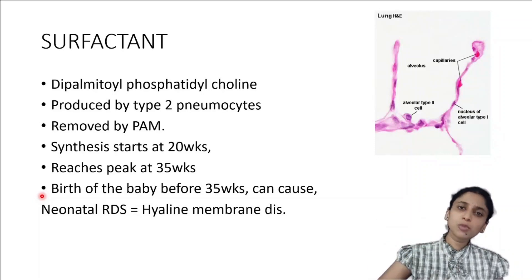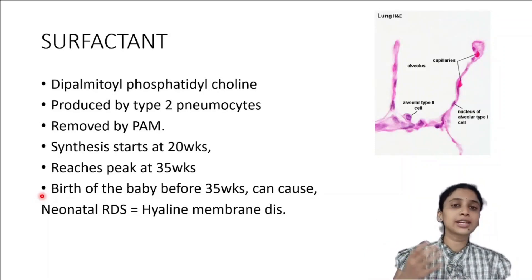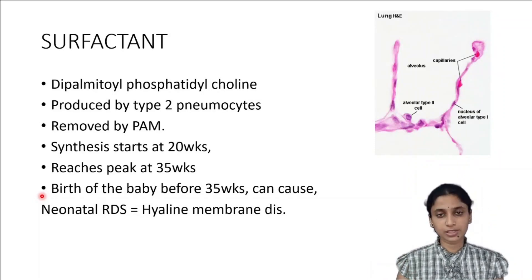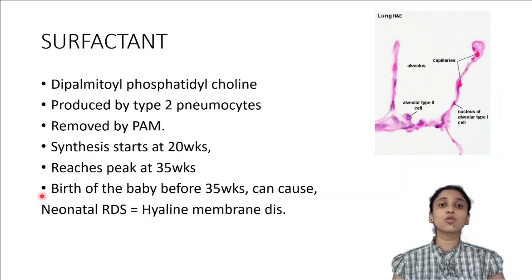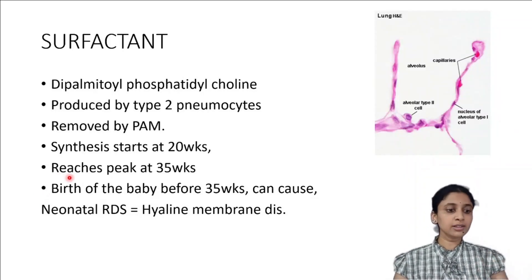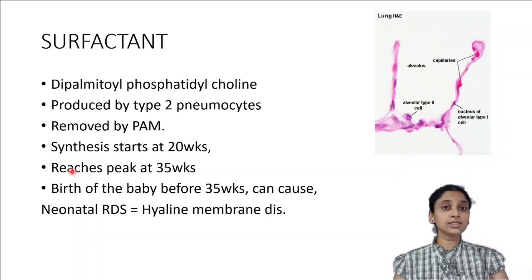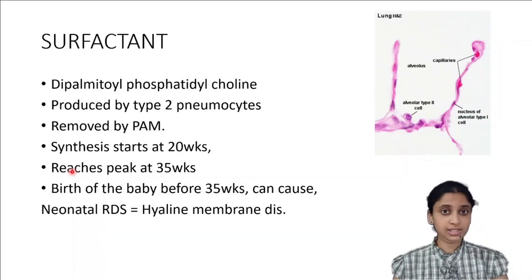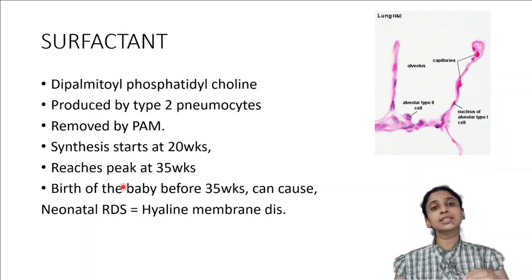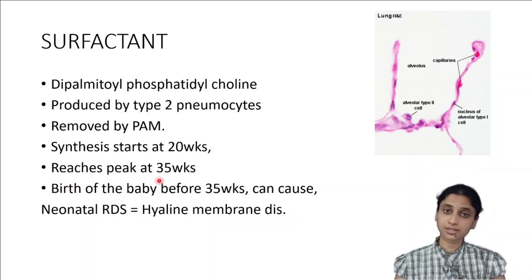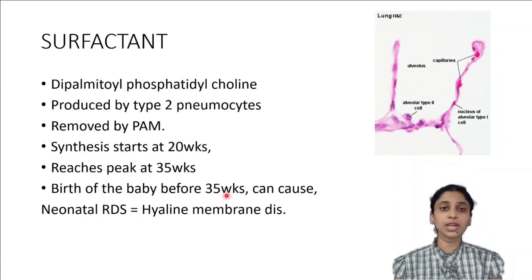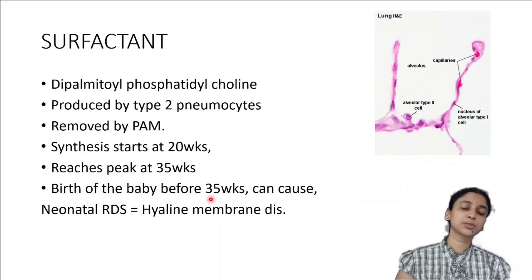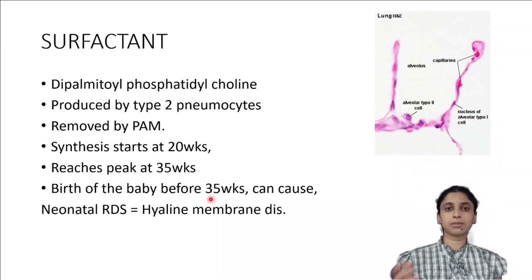The surfactant is secreted. Who is going to remove the secreted surfactant? It is the pulmonary alveolar macrophages, PAM, that remove the secreted surfactant. We know that surfactant synthesis starts in the intrauterine life itself by around 20 weeks and reaches peak at around 35 weeks. If the birth of the baby happens before 35 weeks, it can cause neonatal respiratory distress syndrome, nothing but hyaline membrane disease.